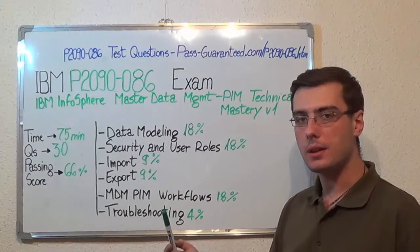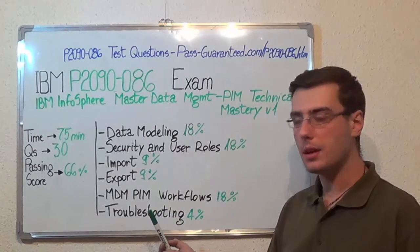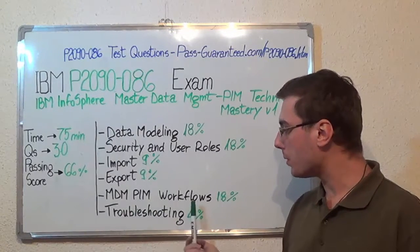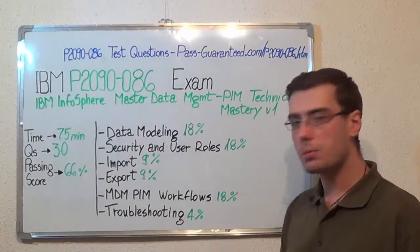After that, import with 9%, next, export, also with 9%, then MDM PIM workflows with 18%, and the last one, troubleshooting with 4%.